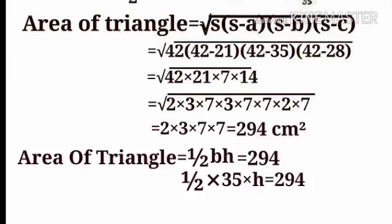Now we are going to find H. Let's get H for the first part of our triangle. One by two, B times H. Then, one by two BH is equal to the area. One by two, B is the base. The base is 35.